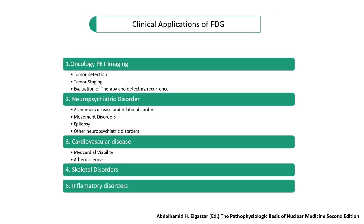FDG has great clinical applications in nuclear medicine. It is used in oncological PET imaging for tumor detection, tumor staging, evaluation of therapy, and detecting recurrence. It is also used in neuropsychiatric disorders such as Alzheimer's disease, movement disorders, and epilepsy, as well as in cardiovascular disease, skeletal disorders, and inflammatory disorders.